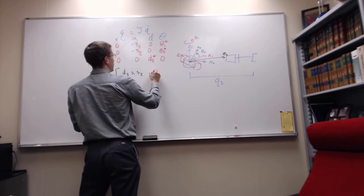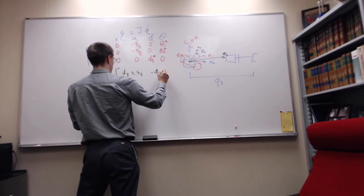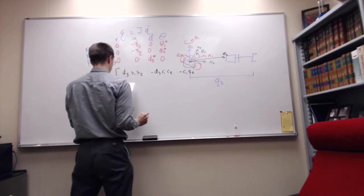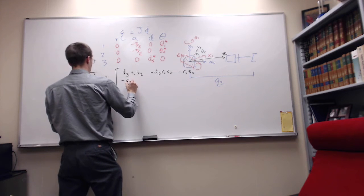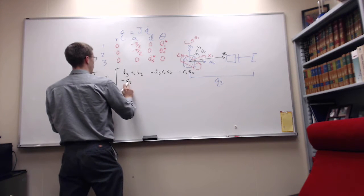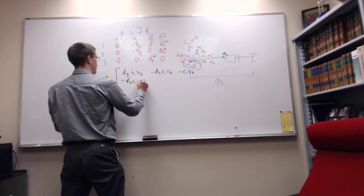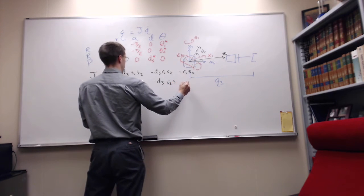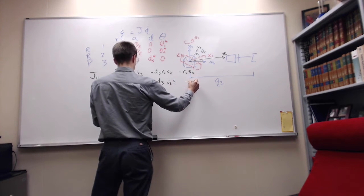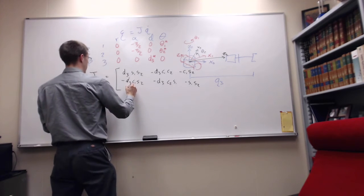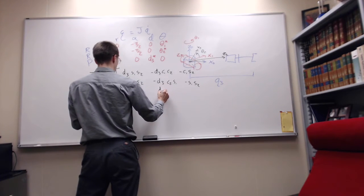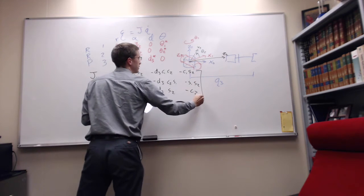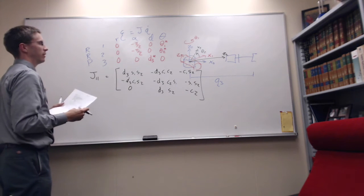Which equals D3 S1 S2, negative D3 C1 C2, and negative C1 S2, negative Q3, D3 C1 S2, negative D3 C2 S1, and negative S1 S2. We've got 0, D3 S2, and negative C2. So this is our Jacobian. We want to find the singularities. To do that, we take our determinant.